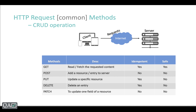If you look at this tabular structure, the first one is GET. A GET request is very basic — it's used when you want to read particular content. As I mentioned, searching for something on Facebook is a read request. I'll set aside the idempotent and safe columns for now and come back to them after covering all the basic common methods.